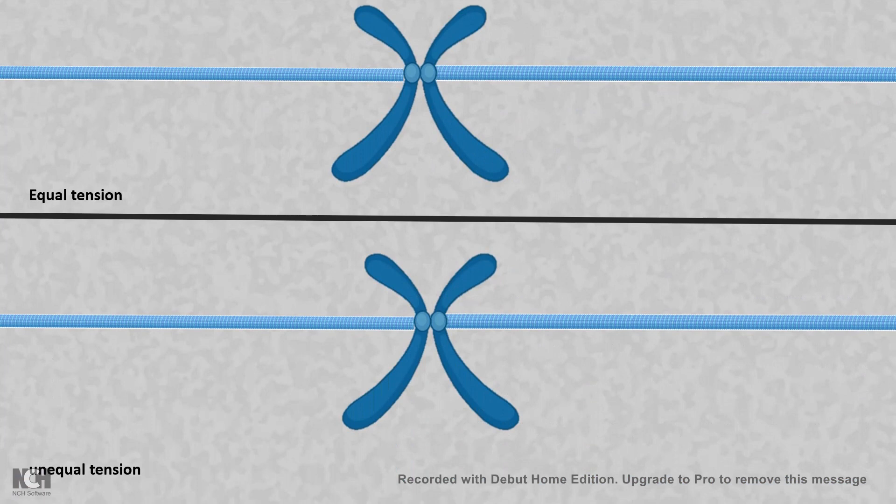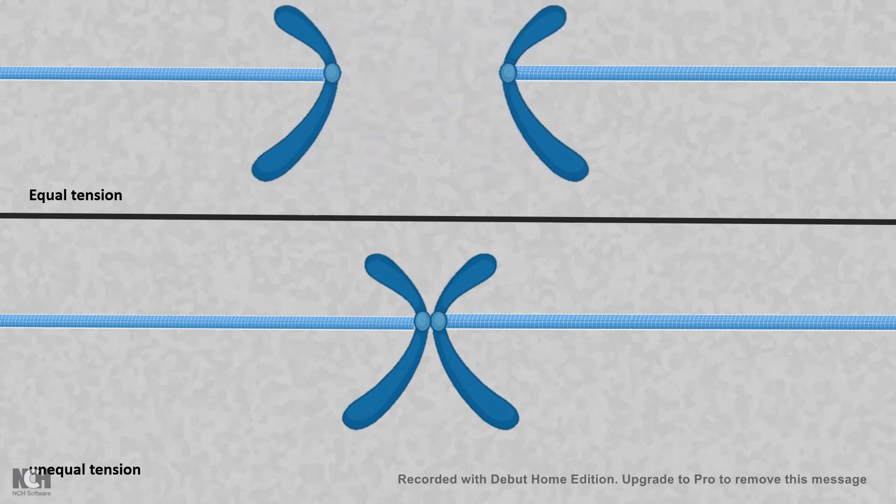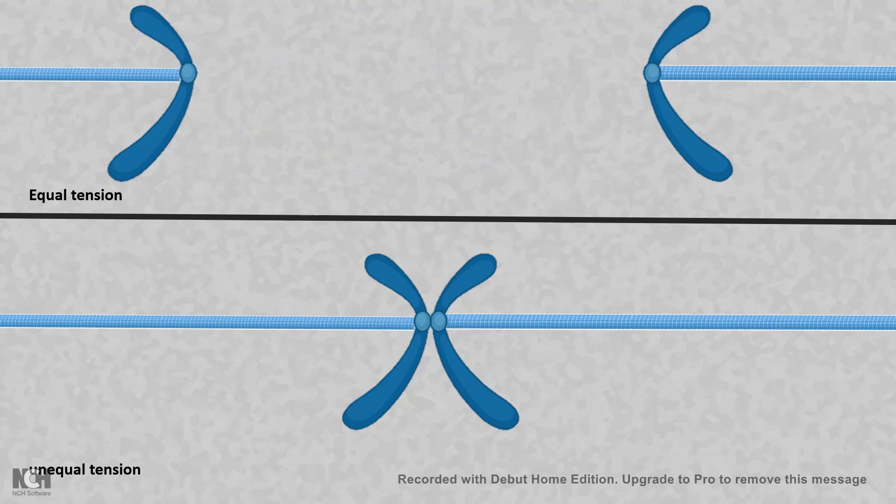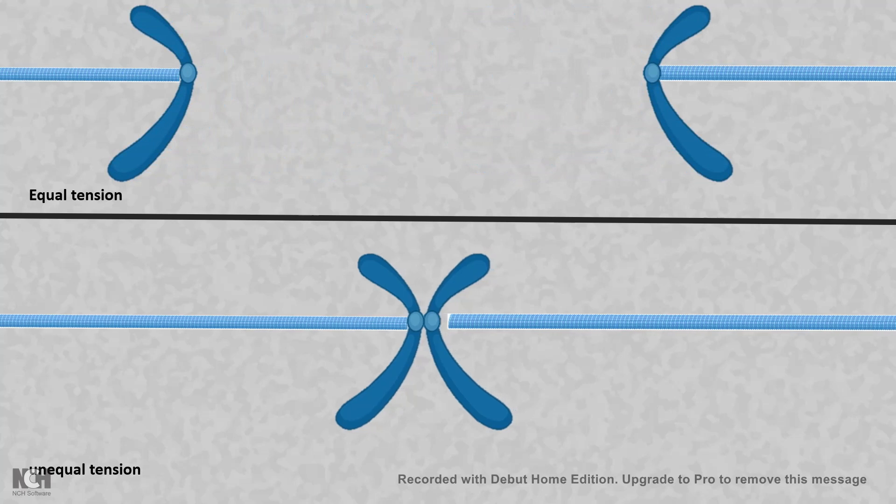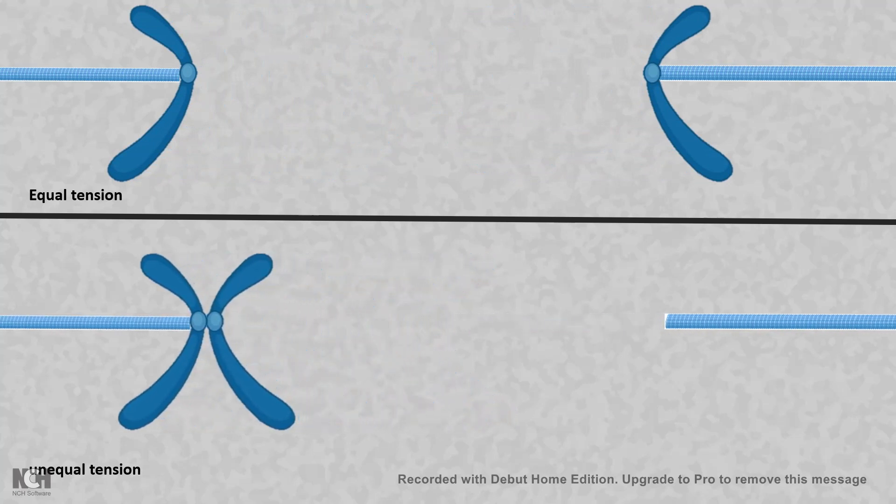That means CENP-A has to understand the tension is proper from both sides and it is the proper time to pull them apart. But if the tension is unequal from both sides, there could be an uneven segregation of the chromosome.